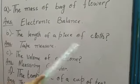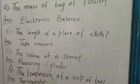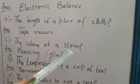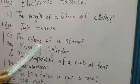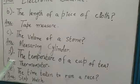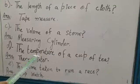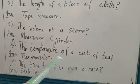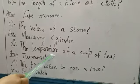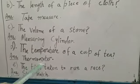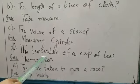C part is the volume of a stone. Answer is measuring cylinder. D part, the temperature of a cup of tea. How to measure it? Our answer is thermometer.